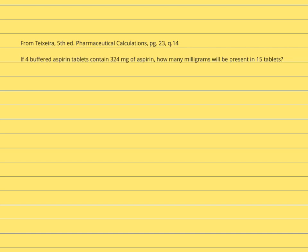Let's try an example. If four buffered aspirin tablets contain 324 milligrams of aspirin, how many milligrams will be present in 15 tablets? Let's set up a ratio. What we know is that in four tablets there are 324 milligrams of aspirin. So if we have 15 tablets, we just need to solve for x milligrams.